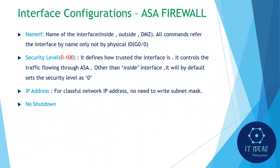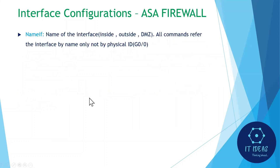Now we'll look at the list of interface configurations for the ASA firewall, which differs from a Cisco router. On a router we just configure an IP address with no shutdown, but on ASA we configure three things: first, the interface name using the 'nameif' command — names like inside, outside, DMZ, or any custom name. All commands reference the interface by name, not physical ID.